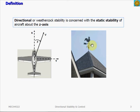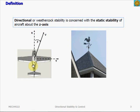Wherever the relative wind is coming from, the weathercock will always turn towards that direction. It will be the same for our aircraft demonstrating directional stability — the aircraft will always want to point its nose into the direction of the relative wind. The moment about the aircraft z-axis is called the yawing moment.